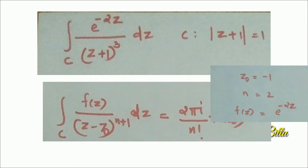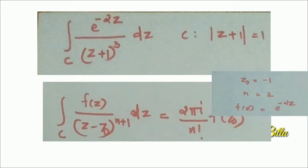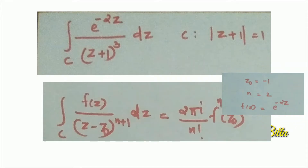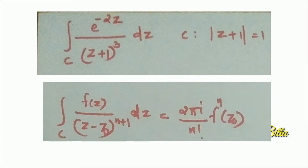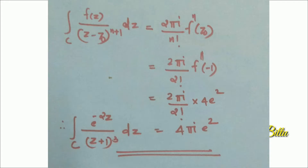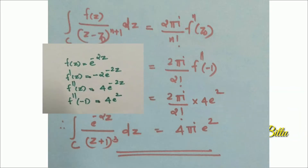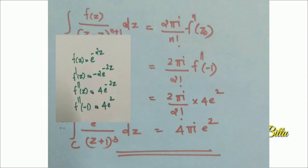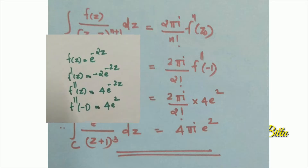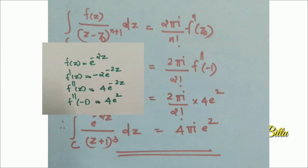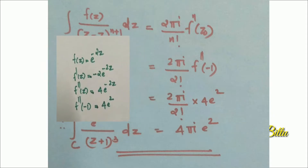Here the power of (z+1) is 3, so we choose N as 2, and f(z) is e^(−2z). By Cauchy's Integral Formula for derivatives, the integral over C of f(z) by (z minus z₀)^(n+1) dz equals 2πi divided by n factorial times f^(n)(z₀). Replacing N and Z₀ on the right side gives 2πi divided by 2 factorial times f″(−1). We have f(z) = e^(−2z), so f′(z) = −2e^(−2z) and f″(z) = 4e^(−2z). Evaluating f″ at z = −1 gives 4e².